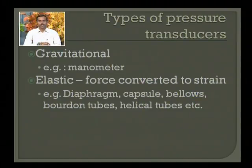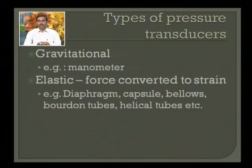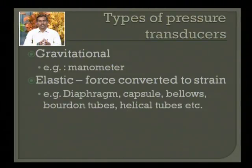There are two different physical categories of pressure transducers. One is the gravitational kind, where gravity forms the basis of measurement, while the second is elastic measurement, where the elasticity property is exploited in order to measure the pressure.